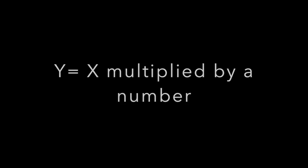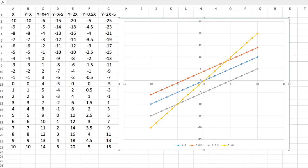The next graph line is here in yellow of the equation y equals 2x. The gradient, you'll notice, is twice that of the other lines.